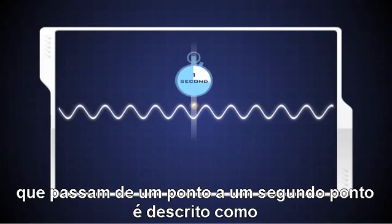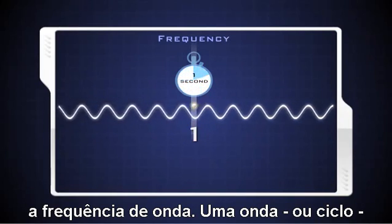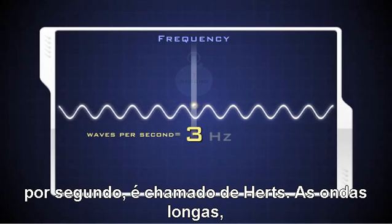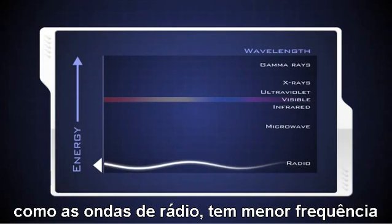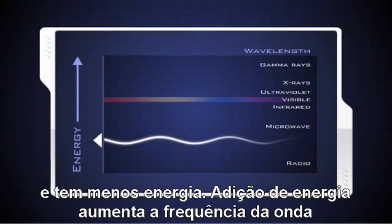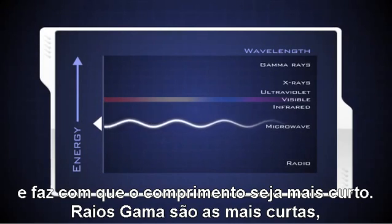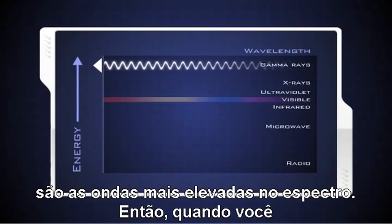The number of crests that pass a given point within one second is described as the frequency of the wave. One wave or cycle per second is called a Hertz. Long EM waves such as radio waves have the lowest frequency and carry less energy. Adding energy increases the frequency of the wave and makes the wavelength shorter. Gamma rays are the shortest, highest-energy waves in the spectrum.